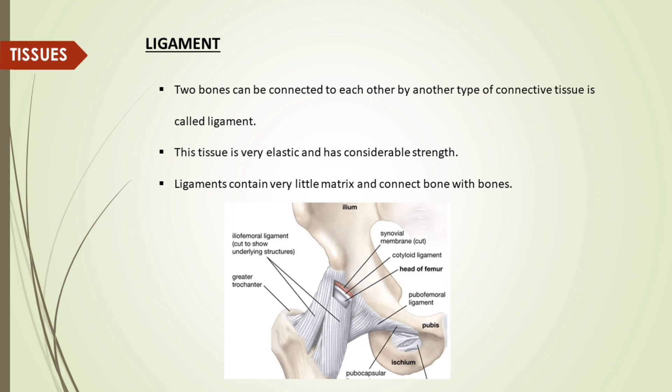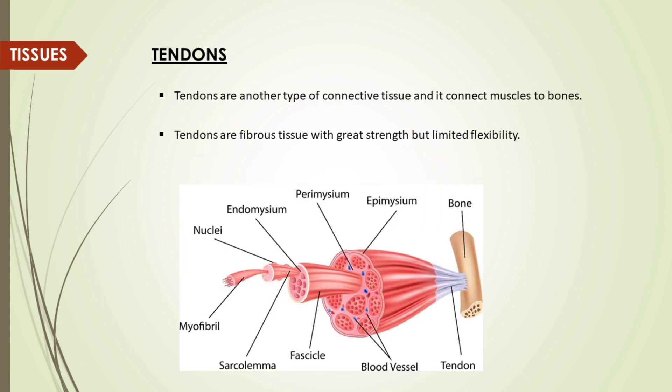Ligament: two bones can be connected to each other by another type of connective tissue called ligament. This tissue is very elastic and has considerable strength. Ligaments contain very little matrix and connect bone with bones.